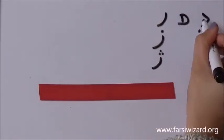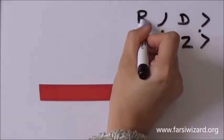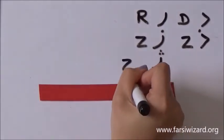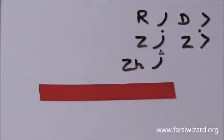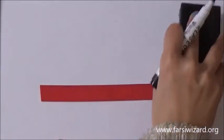So the letter DAL is the equivalent of D in English. ZAL the equivalent of Z. RE the equivalent of R. Z the equivalent of Z again and Z the equivalent of ZH which is Z. It doesn't really exist in English but well. And we don't really use it that often in Farsi but it's good for you to know.